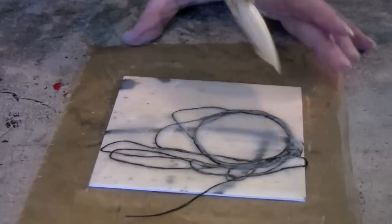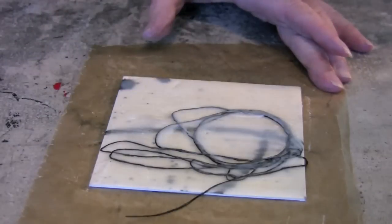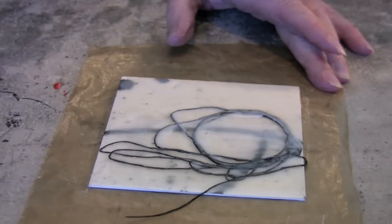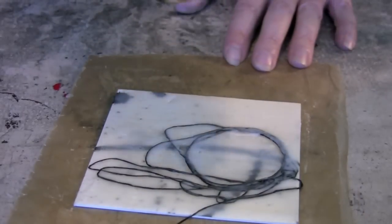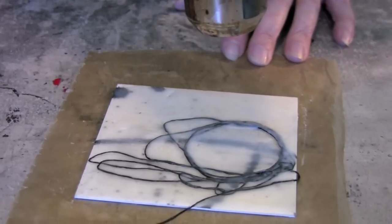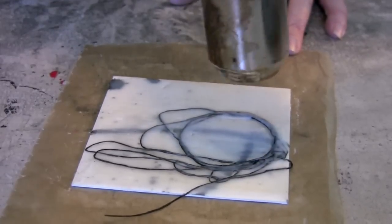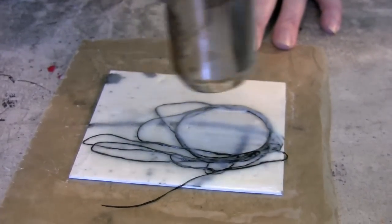Here I'm actually covering it with some more encaustic medium. I'll do a layer on that and take the heat gun to it. So basically, the pigmented wax dental floss is now sandwiched between multiple layers of wax.